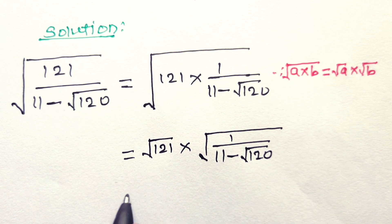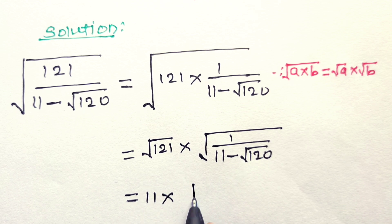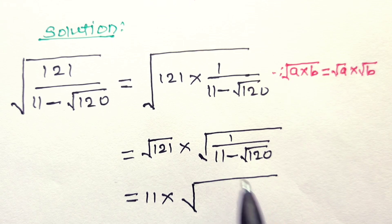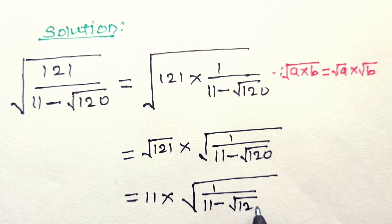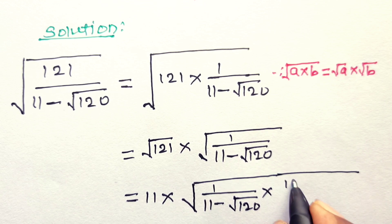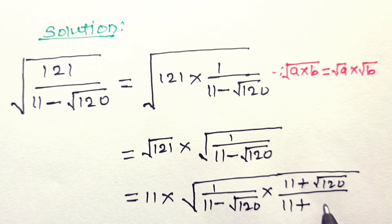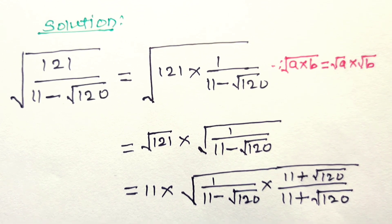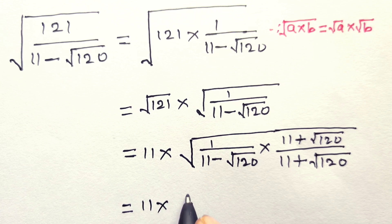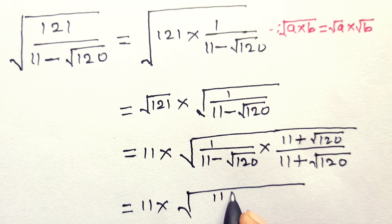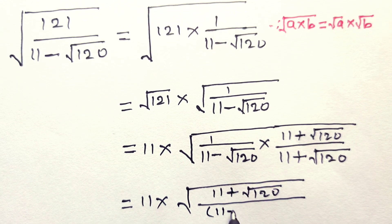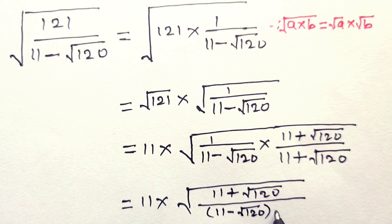Square root of 121 is equal to 11. Now here, we take rationalization of the denominator. So, multiply by (11 plus square root of 120) divided by (11 plus square root of 120). This gives 11 into the numerator (11 plus square root of 120), and denominator (11 minus square root of 120) into (11 plus square root of 120).